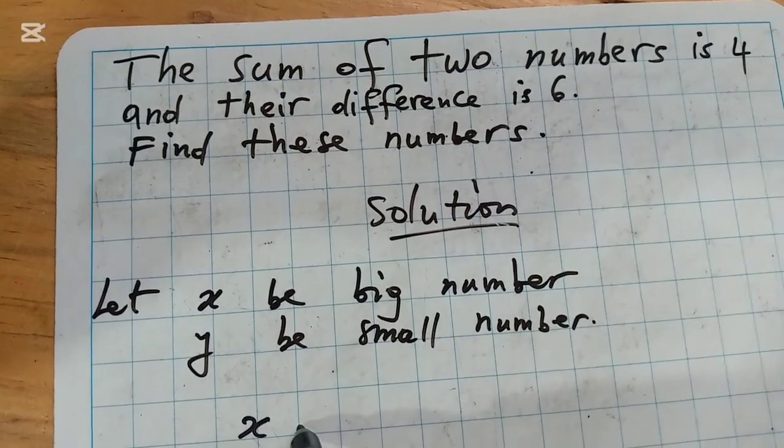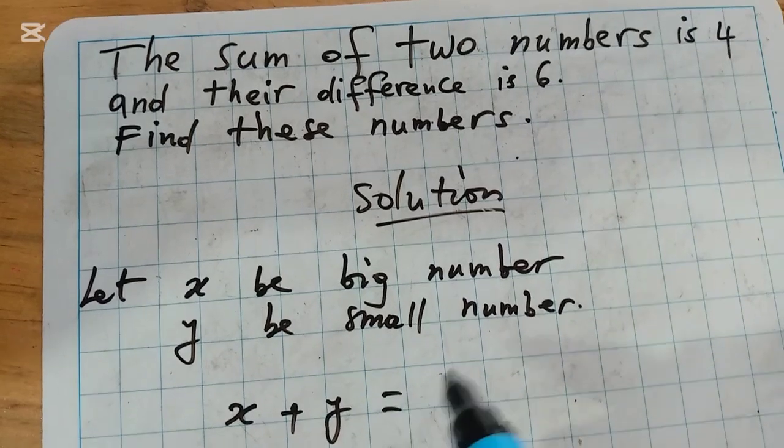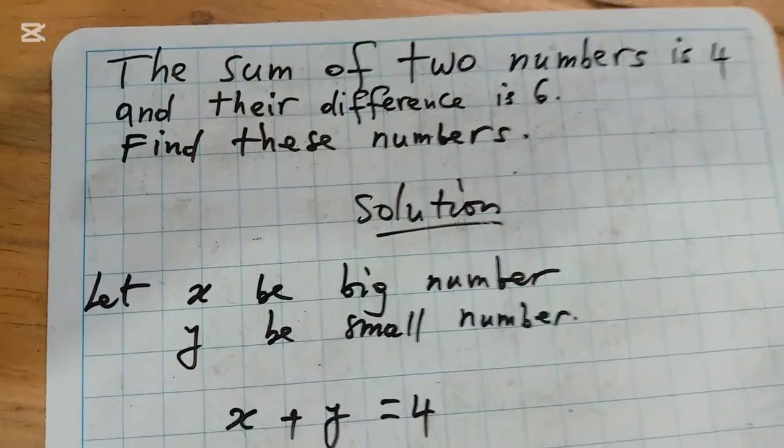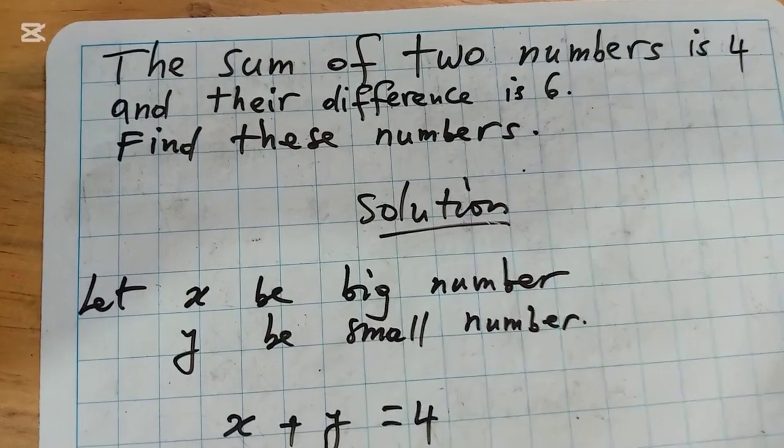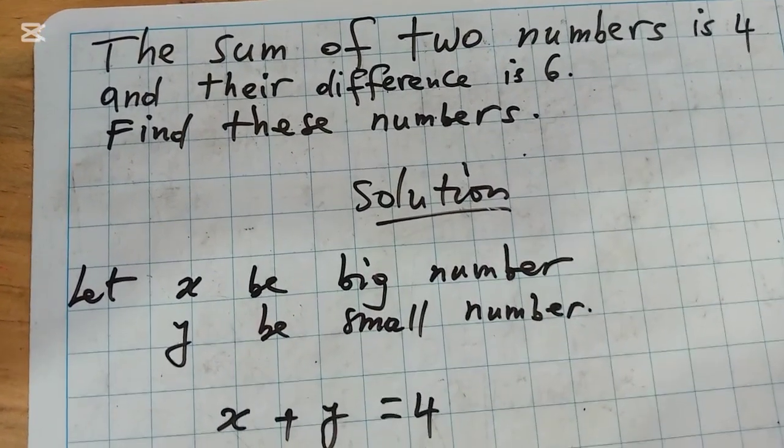On the other side, we have their difference. Their difference is 6, meaning the big number minus the small number gives us 6.